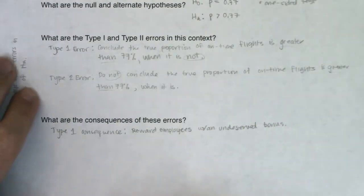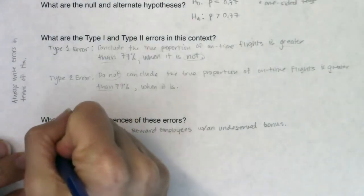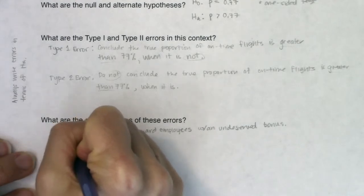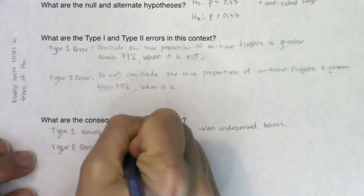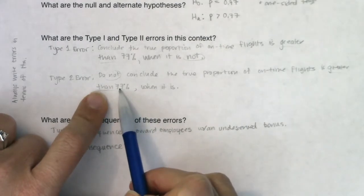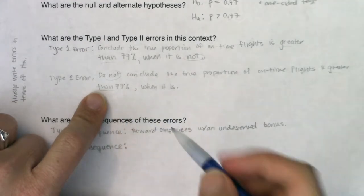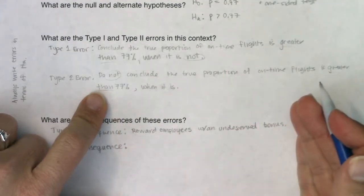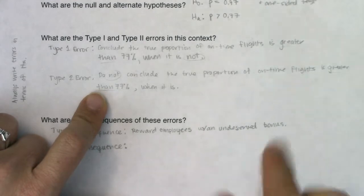I say 'great job' when really they didn't do a great job — they did the same as before, didn't improve, but they'll get a bonus. For the Type 2 consequence: I did not conclude the true proportion of on-time flights was greater than 77% when it was, so they don't get their bonus. But did they earn it this time? Yes. The Type 2 consequence: I do not reward employees with the bonus they deserve.